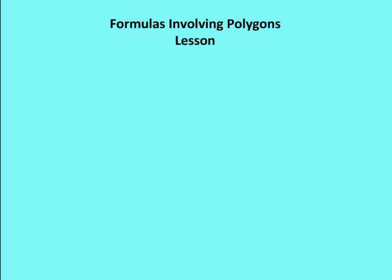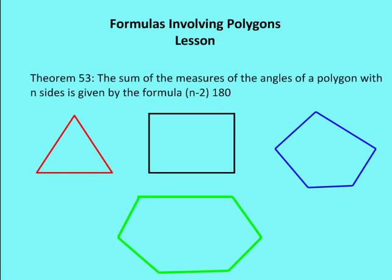Remember, a polygon is a many-sided figure. Let's take a look at our first theorem, theorem number 53: the sum of the measures of the angles of a polygon with n sides is given by the formula n minus 2 times 180 degrees. We know that the sum of the measures of a triangle — which has three sides — is going to be 180 degrees. So 3 minus 2 times 180 gives us 180 degrees for three sides.